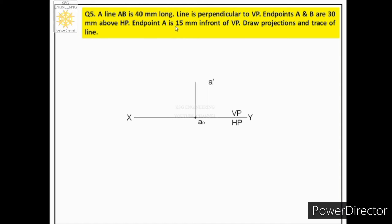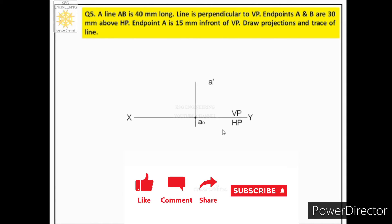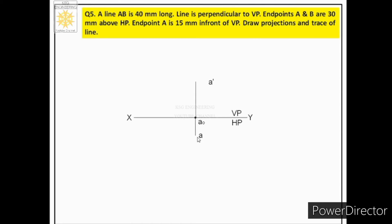Endpoint A is 15 mm in front of VP, so we represent this distance on the opposite plane, HP. We draw another continuous thin line of 15 mm below the reference point and mark its end as small letter a — the top view of point A. Since the line is perpendicular to VP, we draw a perpendicular line of 40 mm (true length) from point a on HP, marking the end as small letter b. This represents the top view of line AB.